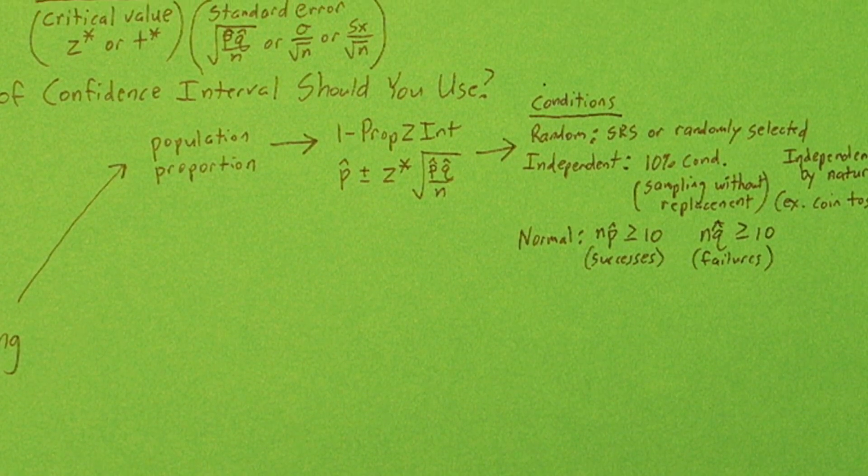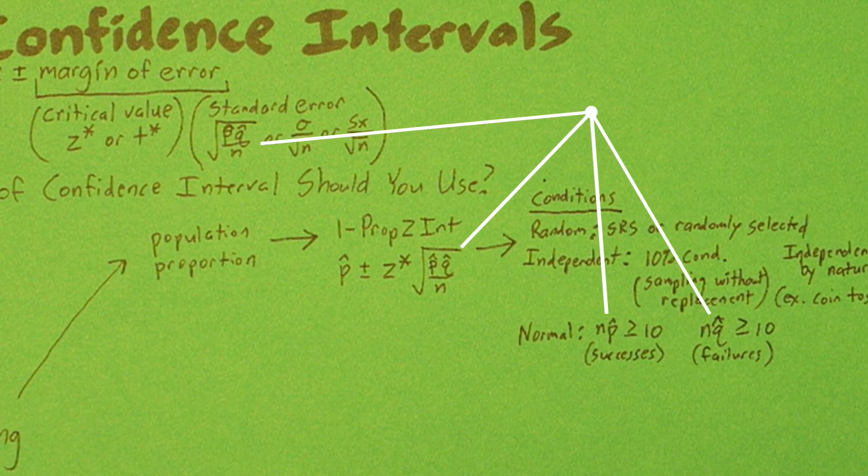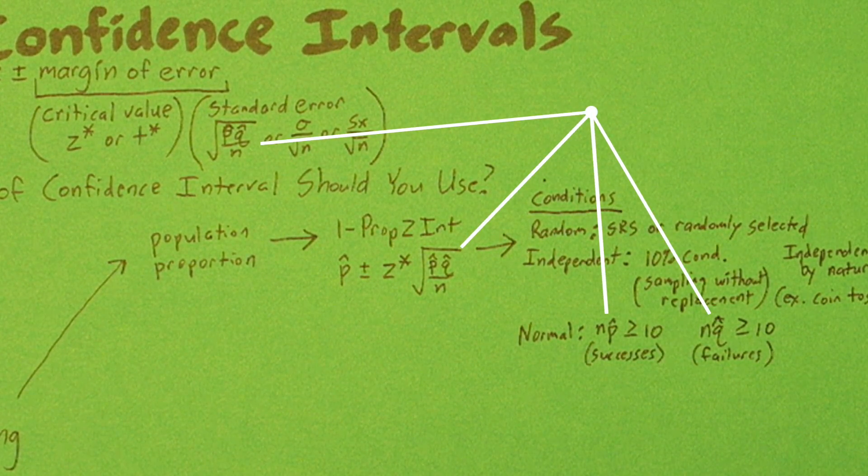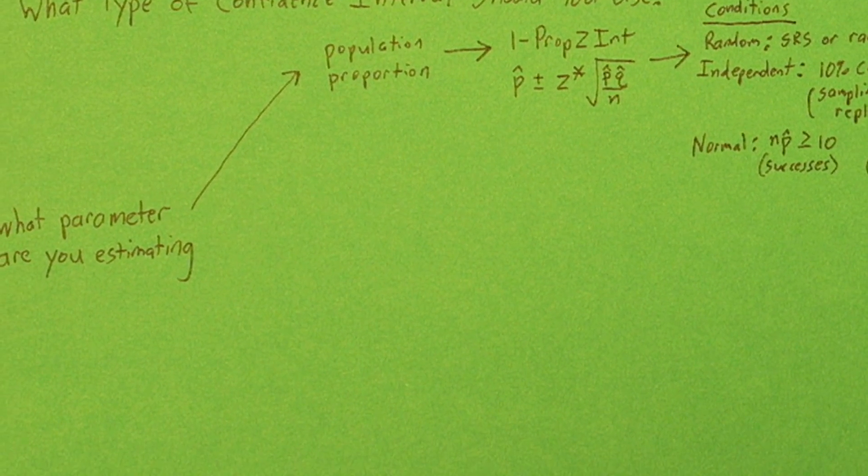Note that most of the formulas actually use p, not p-hat. But if p is unknown, it's okay to use p-hat in the formula. After all, it's our best guess at what p is.